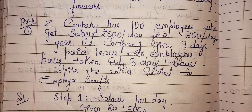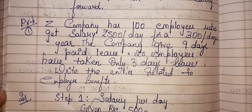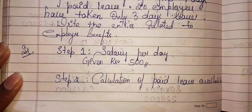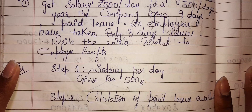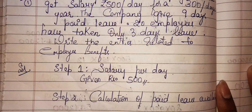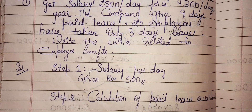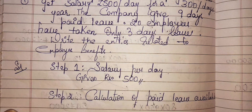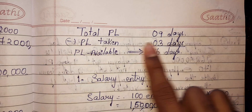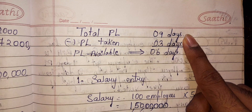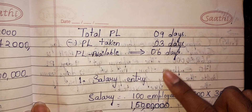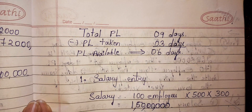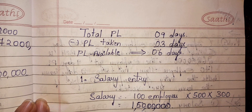There are certain steps you need to calculate. The first step is to find out the salary per day. In this question, it is given directly that salary per day is ₹500. Second, we have to calculate the paid leave available. The company is giving nine days paid leave in a year, and 20 employees have taken only three days, so the remaining six days is the paid leave to account for.